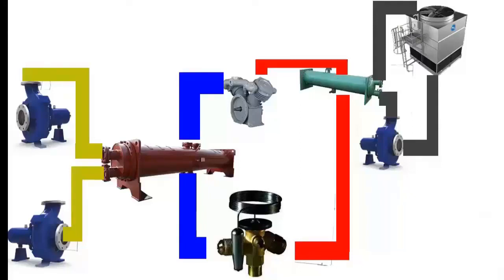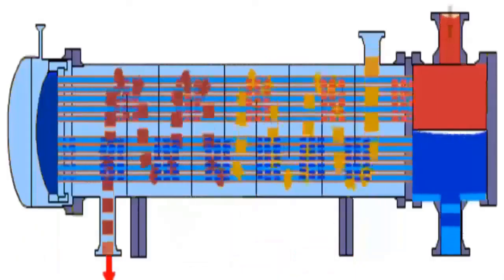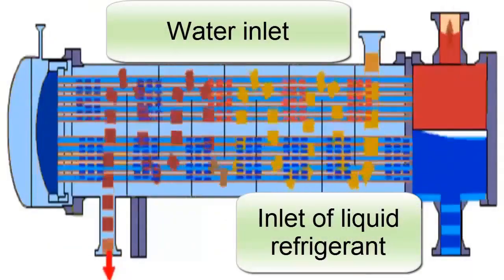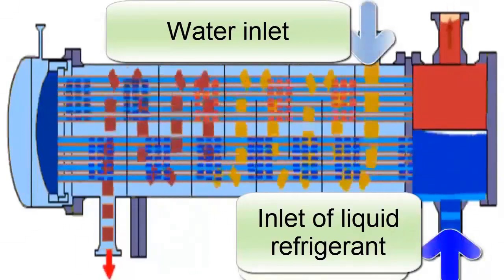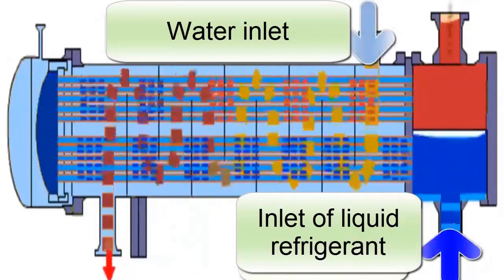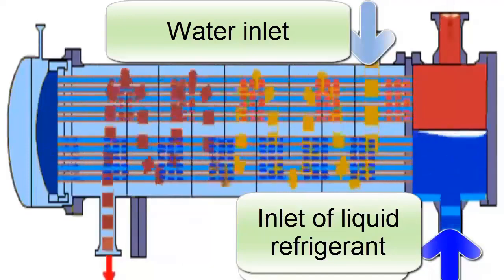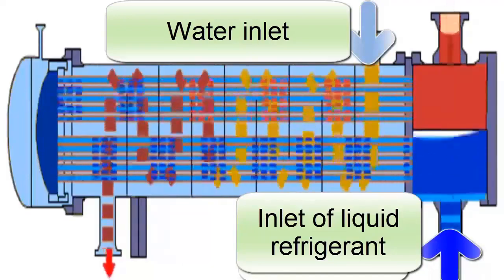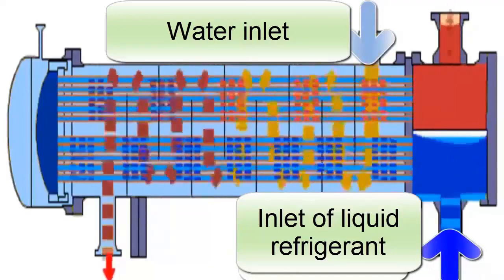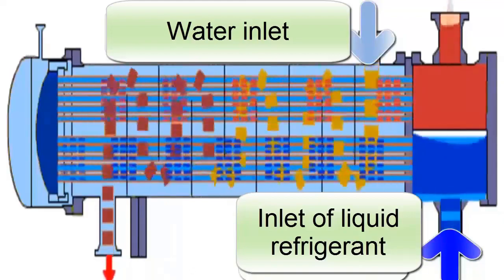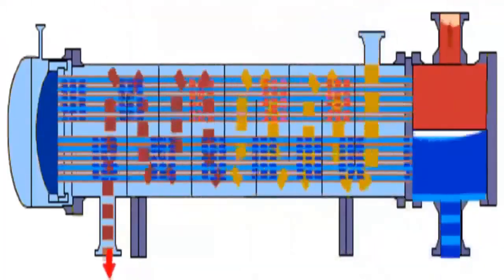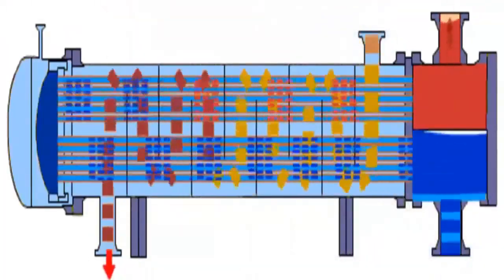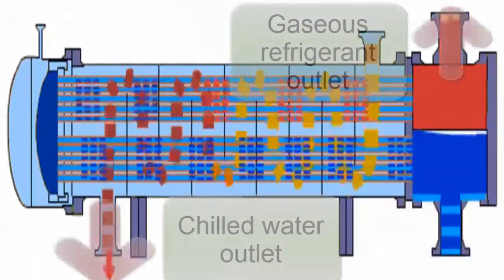The refrigerant is in the chiller evaporator and since it has a low temperature, due to the low pressure that the compressor causes by sucking the refrigerant, the pressure drops and when the pressure drops we have a low temperature. That low temperature allows the heat from the ice water to pass into the refrigeration circuit, causing the refrigerant to begin to evaporate.